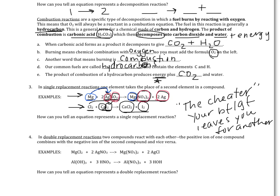In the second example, calcium and iodine are dating — couple of the year — until calcium starts looking around and sees chlorine. Calcium thinks chlorine's looking a little better, so chlorine swoops in and kicks iodine out. Now iodine is left crying all alone, and calcium and chlorine are together.